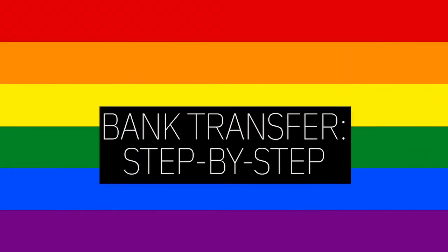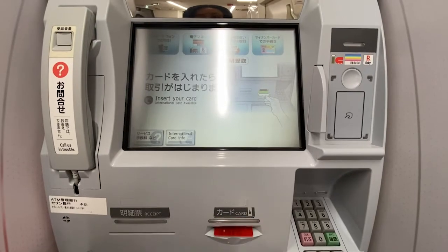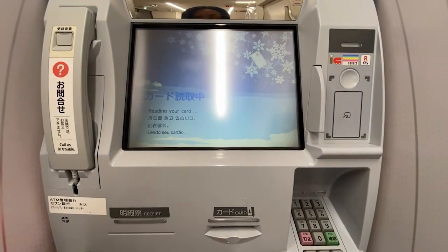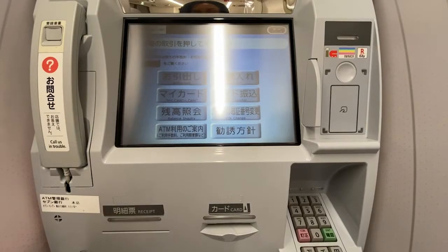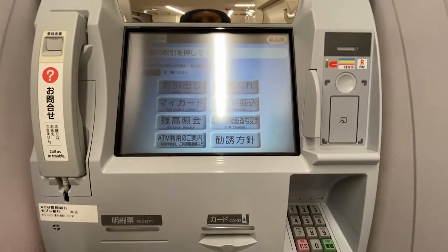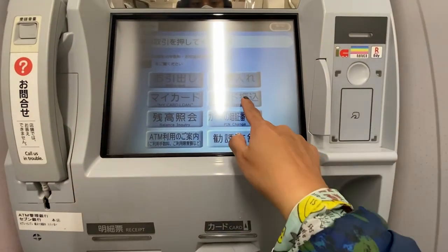Now on to our step-by-step guide on how to make a bank transfer. Step 1: Insert your ATM card in order to access the banking options screen. Step 2: Choose the Kado Furikomi option — that's the second from the top option on your right side when facing the screen. In other banks' machines, this might appear as Oforikumi or Gosokkin.